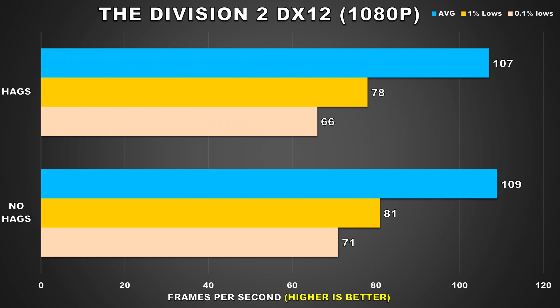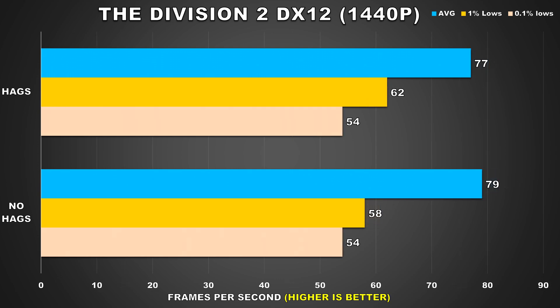The Division 2 is next. At 1080p we see a slight performance regression with hardware accelerated GPU scheduling enabled. However, when the resolution is bumped up to 1440p, the results are very close to each other — not noticeable at all — with the 1% lows just slightly ahead with HAGS enabled.